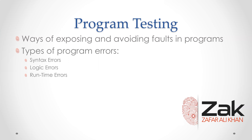Many IDEs will allow you to single-step through a program to find these errors — this is called stepping, which I'll demonstrate in another lecture. You can also manually work through a program using tools such as trace tables. Trace tables show the process of dry running a program, with columns showing the values of each variable as they change — you will have had this experience from your O-level studies.